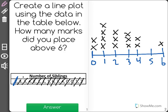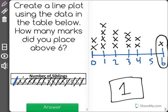Now the question is, how many marks did you place above the 6? Well, I could see the 6 over here. I only have one mark above it, which means that the number 6 only shows up once in my data set. Our correct answer is 1.